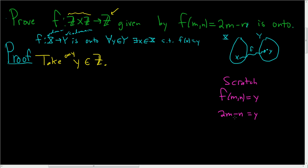We can pick M and N, these are integers. So let's pick M equals 0, and then we can pick N equals negative y. What's that going to do for us? It's going to give us 0 minus negative y, which will be y.